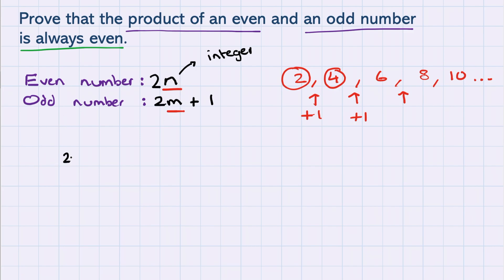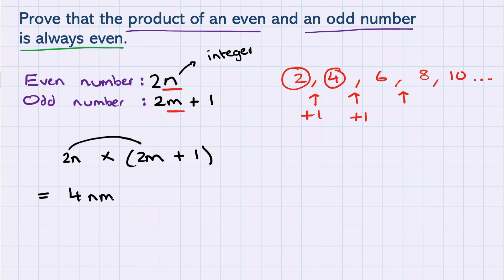We've now expressed an even and an odd number algebraically. The question asks us to find the product, so that's going to be 2n times (2m plus 1). I need to use brackets because I'm multiplying the whole even number by the whole odd number. Expanding this gives 2n times 2m, which is 4nm, and 2n times 1, which is 2n.